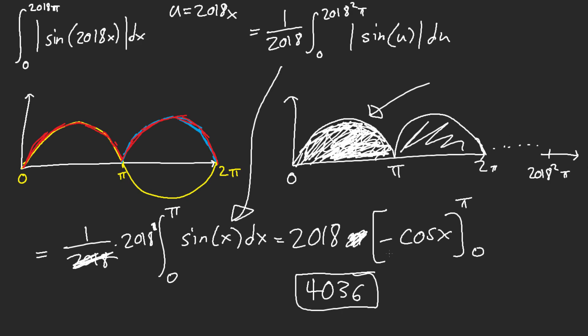And, of course, it's just 2018 square hills. The 2018 counts as out with this reciprocal, and then we just get 2018 times this integral.